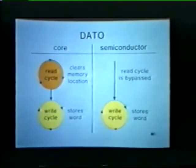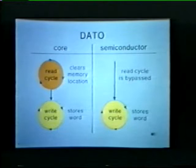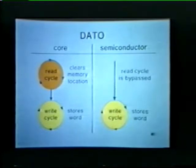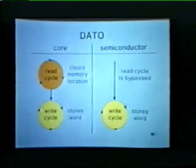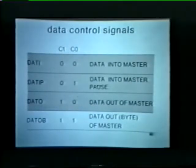Let's briefly compare data O transfers involving core memories and semiconductor memories. A data O transfer requires separate read and write cycles in a core memory unit — a read cycle must be performed to clear the addressed core location, then the write cycle is performed to store the word supplied by the master device. In contrast, semiconductor memory does not have to be cleared prior to storing new data; hence the read cycle is bypassed and the memory unit proceeds directly to the write cycle to store the data word supplied by the master device.